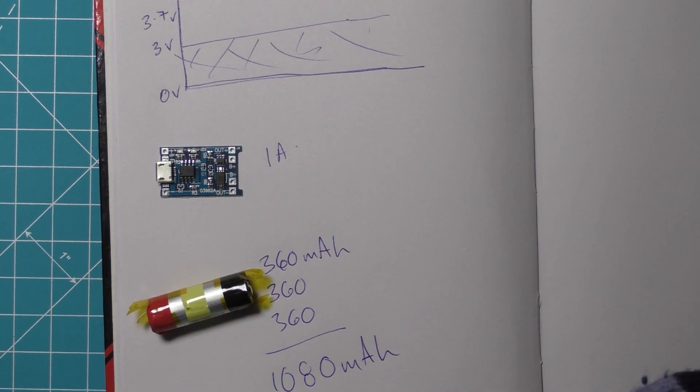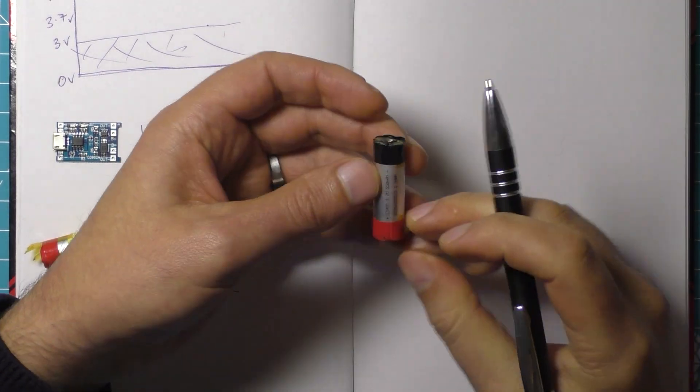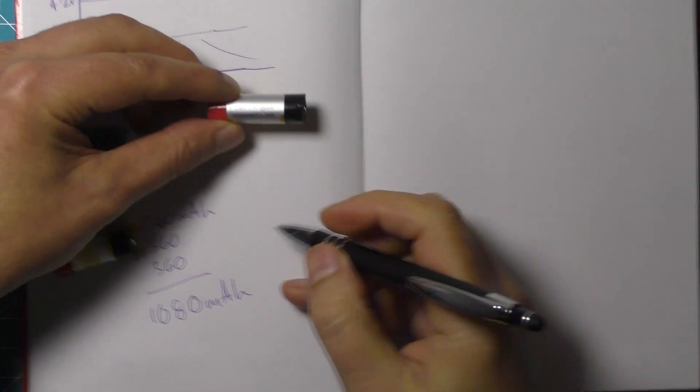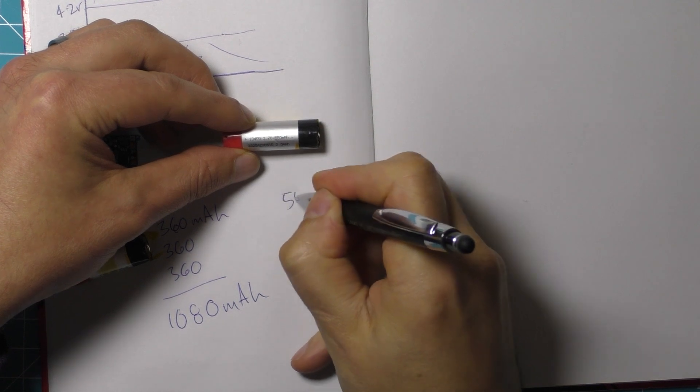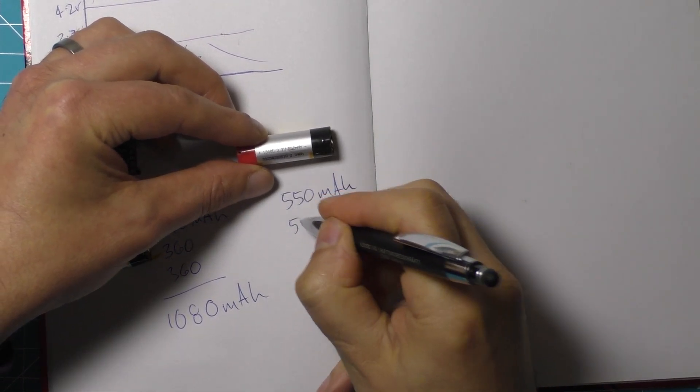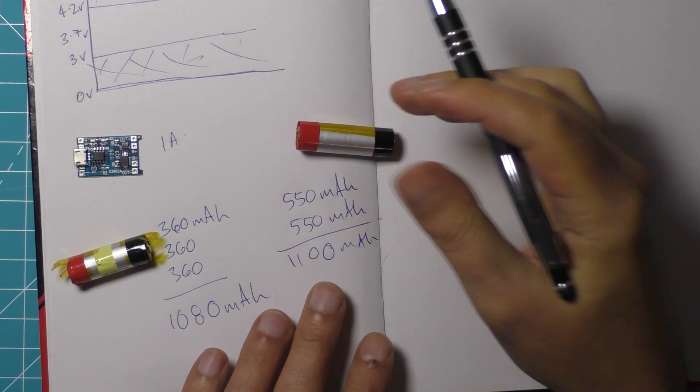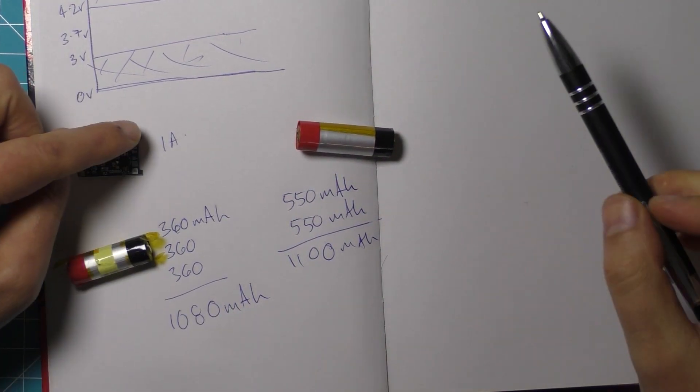Another thing we could do, and this was my original thought, was to use two of these ones. So this is a 550 milliamp hour cell and two of them would give us 1100 milliamp hours which would also be within our rating of one amp.